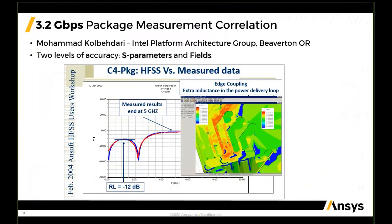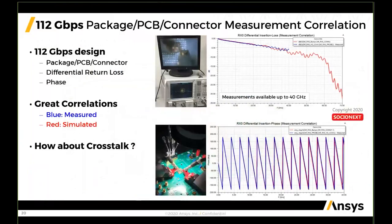That was 2004 and a 3.2 Gbps package. Fast forward 16 years to 2020, and we are talking about a 112 Gbps package-PCB-connector correlation from our customer Socionext. This package is merged on the board and routed all the way to a connector at the edge of the board — a complex assembly of package, PCB, and connector. Our HFSS simulation results, shown in red, correlate extremely well with the blue line of lab measurements, with measurements available up to 40 GHz.